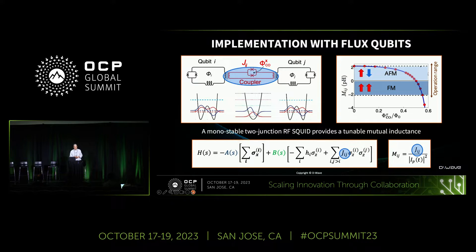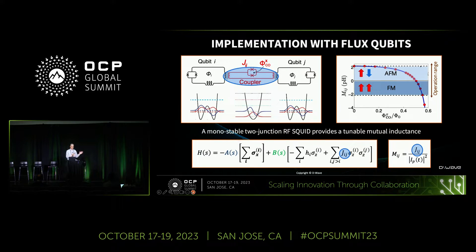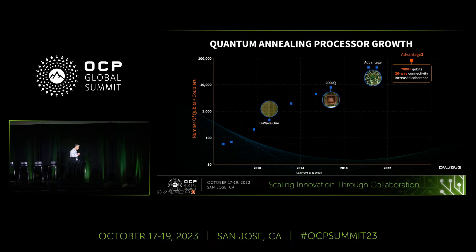The lion's share of the circuitry on these chips is classical control or readout circuitry, also implemented in superconducting devices. We're currently at the 250-nanometer technology node — relatively old-school lithography — with plenty of room to scale. We're not in any way limited by IC technology. We've published a great deal about how we do this; if you're curious, look up my publications or come talk to me.